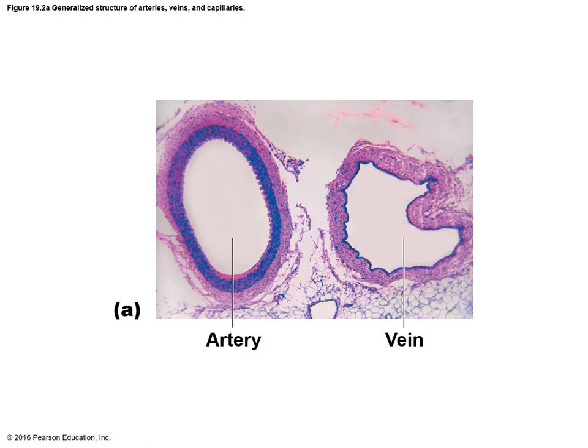If a blood vessel is nice and round and maintains its circular shape, that is an artery — because it has a thicker muscle wall that helps maintain the shape and withstand higher pressure. The vein is going to look collapsed. When blood is actually flowing through it, it is round, but when doing a tissue sample, the wall appears collapsed.